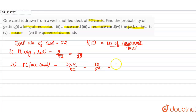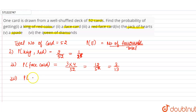Dividing 12 by 52 by 4 gives us 3 by 13. So probability will be equal to 3 divided by 13. Now in the third part, it is asked to find the probability that the card drawn is a red face card.